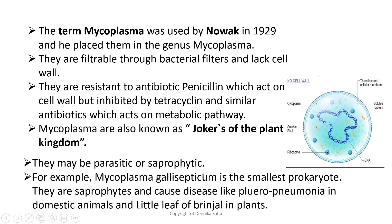Mycoplasma are known as the 'jokers of the plant kingdom.' They may be parasitic or saprophytic. Parasitism is a relationship between two species in which one benefits at the expense of the other — examples include lice, fleas, and ticks. Saprophytic organisms obtain food from dead matter — examples include mycorrhizal fungi and mushrooms. Mycoplasma gallisepticum is the smallest prokaryote; saprophytes cause diseases like pleuropneumonia in domestic animals and little leaf disease of brinjal in plants.